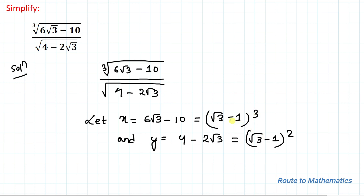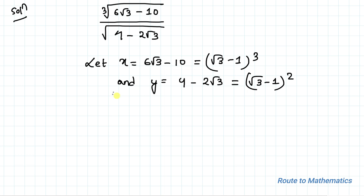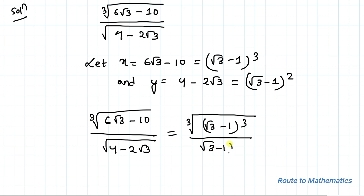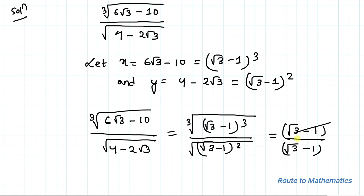So we can write 6√3 - 10 as (√3 - 1)³. Substituting back: cube root of (√3 - 1)³ divided by square root of (√3 - 1)². The cube root and cube cancel, giving (√3 - 1). Then (√3 - 1) divided by (√3 - 1) — both terms cancel — giving us 1 as our final answer.